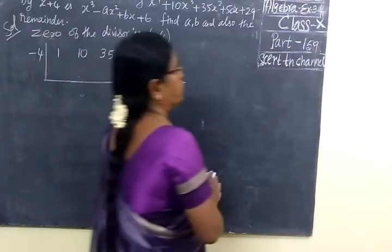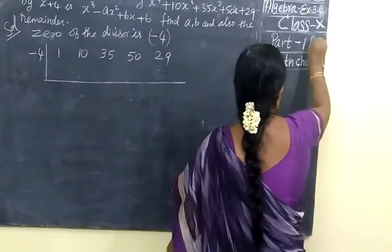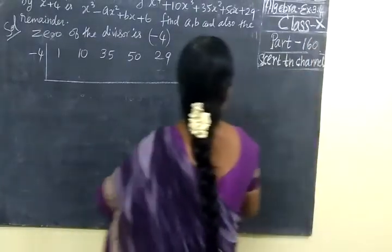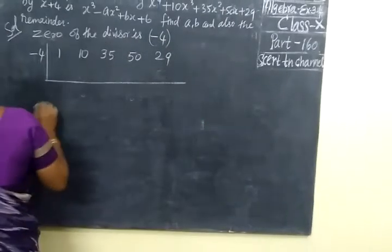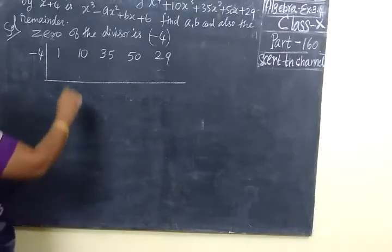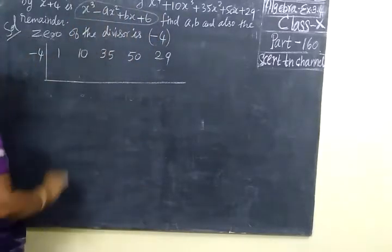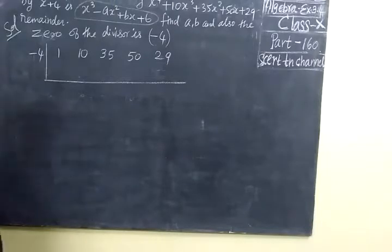Good evening students. Today we are seeing Part 1.16, Exercise 3.4. Here the quotient is dividing. We have a case where you are finding the value of A and B.